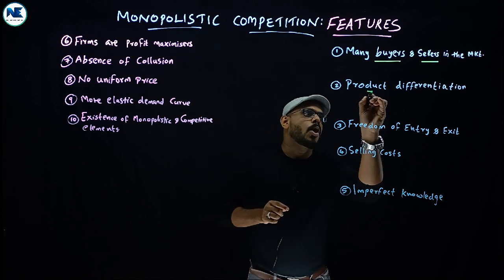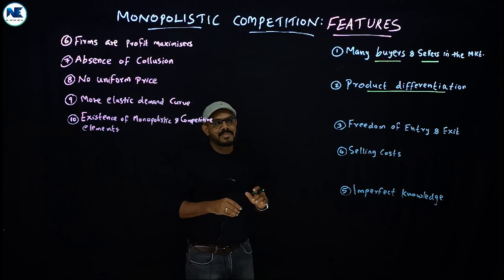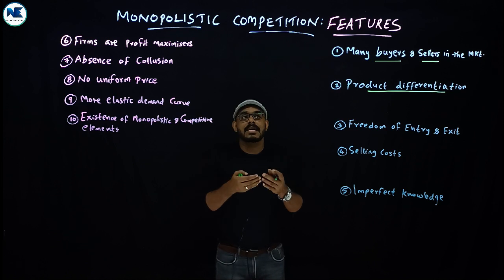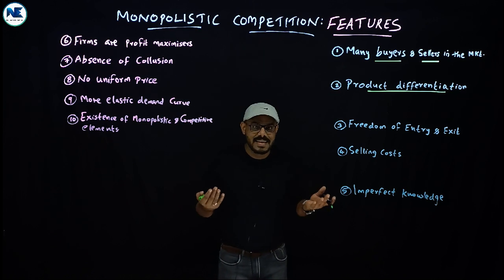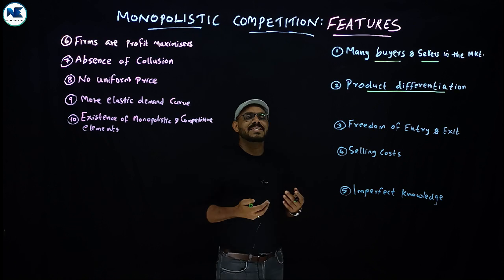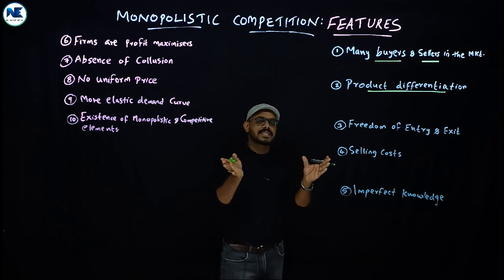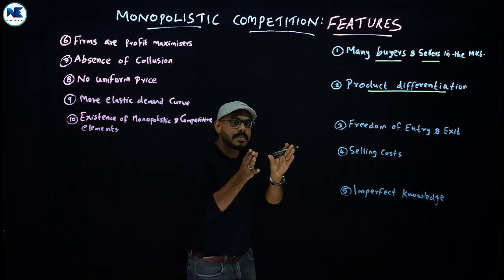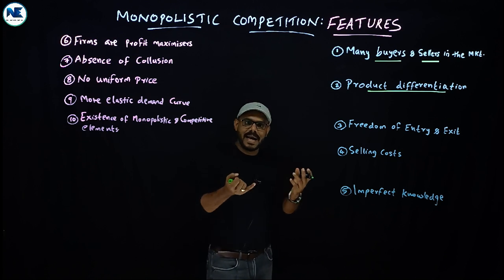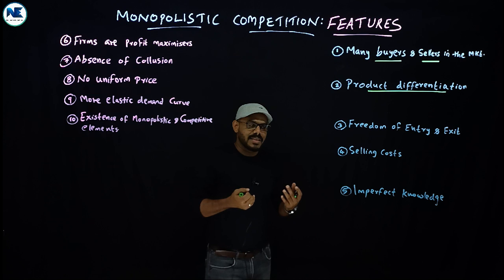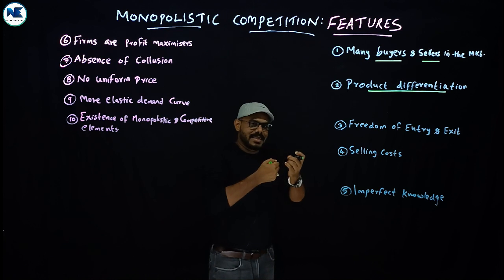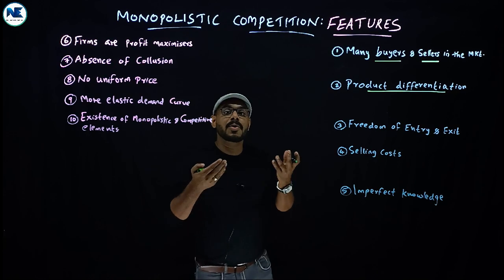The second point — and this is very very important — is product differentiation, the unique feature of monopolistic competition. In the real world, monopolistic competition is the most realistic market structure. Each firm differentiates its product through branding, packaging, design, and other means, giving their product a slight difference from competitors.